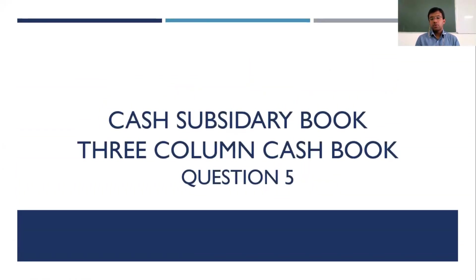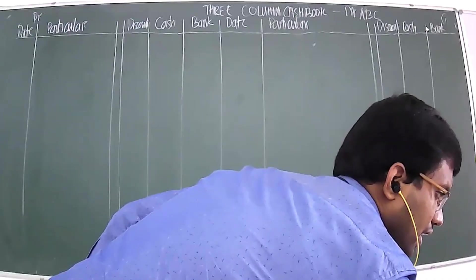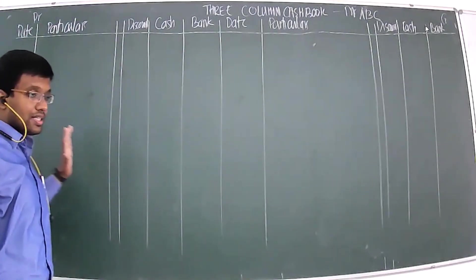In this session we will be dealing with the preparation of a three-column cash book. We just learned that the three-column cash book is one of the subsidiary cash books, and we will be learning how to pass entries in it. We have a question: enter the following transactions in the three-column cash book of Mr. XYZ for January 2020, with around nine transactions given.